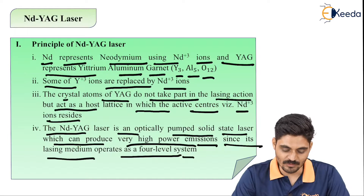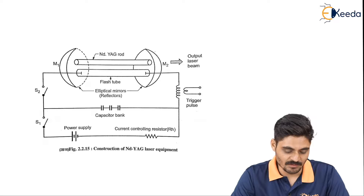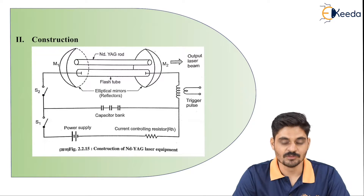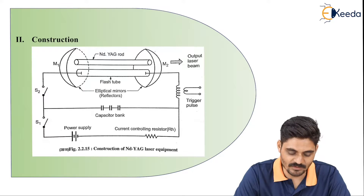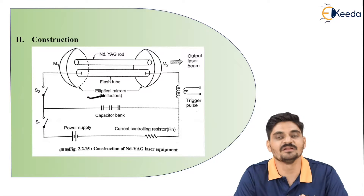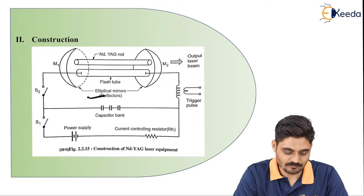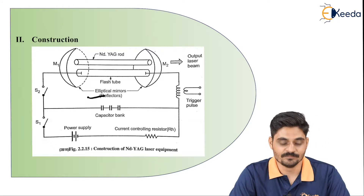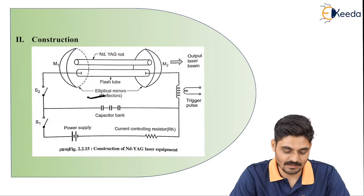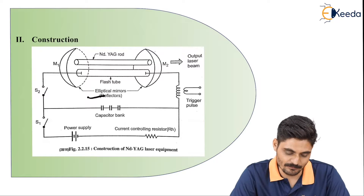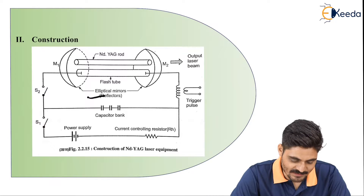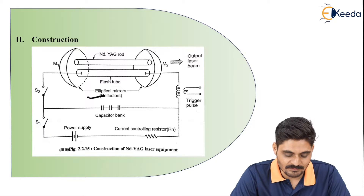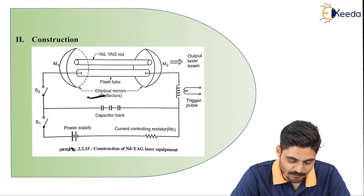This is the construction of Nd:YAG laser, in which we have mirrors M1 and M2 which are elliptical mirrors. The Nd:YAG rod is there, below which there is a flash tube connected between these two elliptical mirrors. There are switches S1 and S2, and between the supply and the resonant cavity we have a capacitor bank.